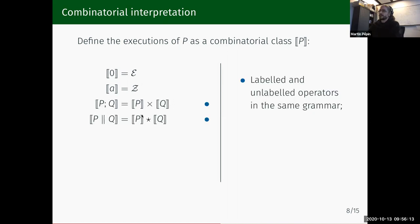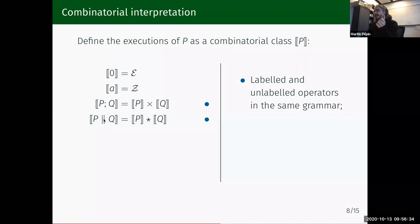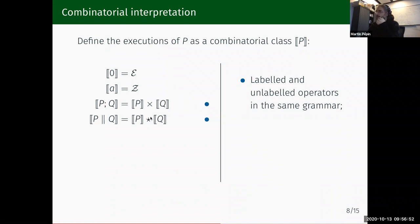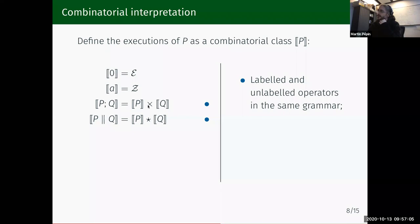The next constructors are more interesting. For P sequence Q, an execution of P sequence Q is an execution of P followed by an execution of Q — any pair is possible, which is exactly a Cartesian product. For parallel composition, I also have to account for the interleaving, so the trick is to use the labeled product from labeled combinatorial classes. This means: take a scheduling of P, take a scheduling of Q, and choose an interleaving. It's rather unusual to have both the unlabeled (Cartesian product) and labeled (labeled product) operators in the same grammar.